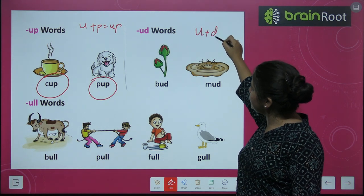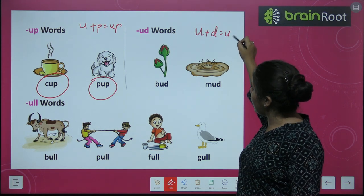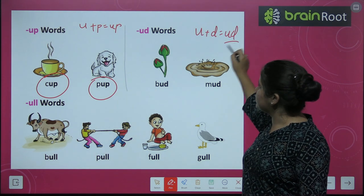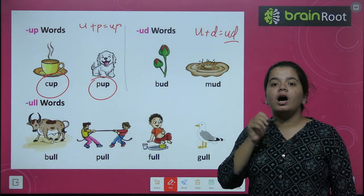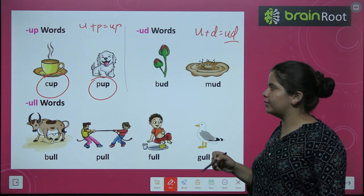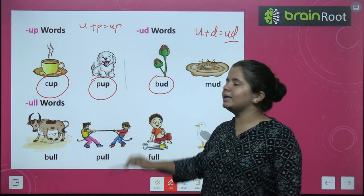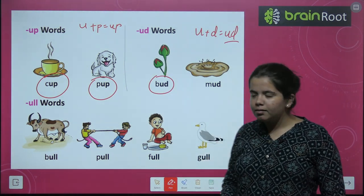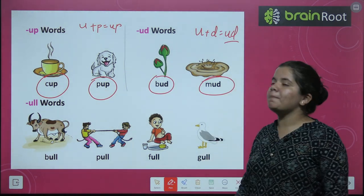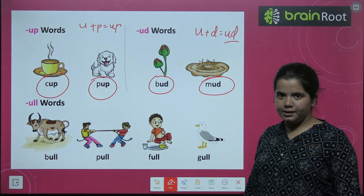Next we have U plus D, -ud words — where at the end you hear the -ud sound. B-U-D, bud. M-U-D, mud.